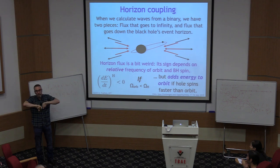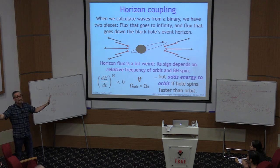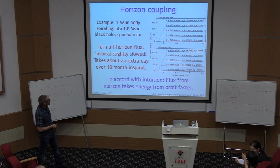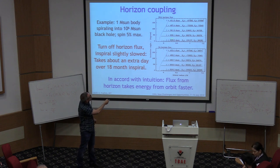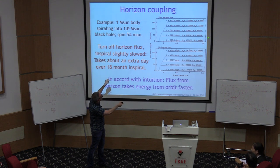Quantifying this effect: for a slowly spinning black hole, the inspiral takes about 658 days; turning off the horizon flux makes it take about a day longer — a small correction. But for a very rapidly spinning black hole, turning on the horizon flux slows the inspiral by weeks. Since phase can be measured with very high precision, a four-week effect corresponds to tens of thousands of radians of phase change — a monstrous, measurable effect that is completely counterintuitive given what an event horizon is supposed to do.